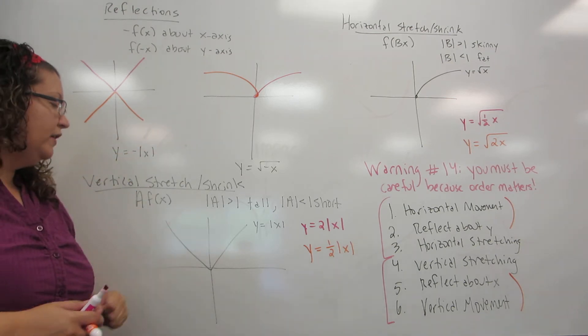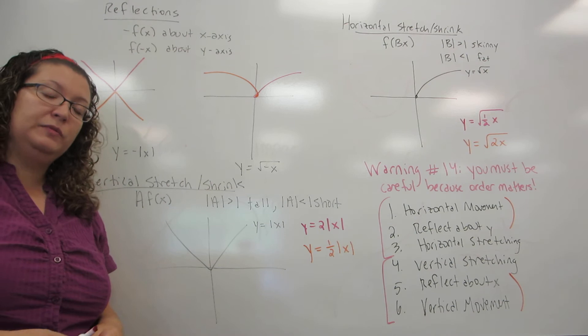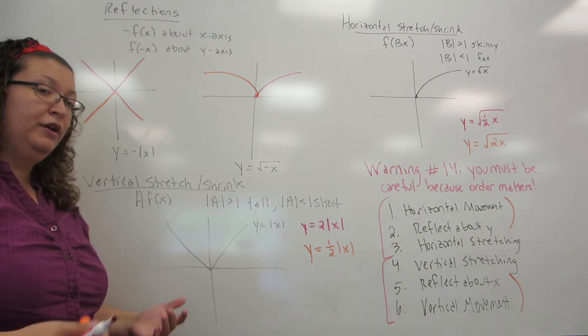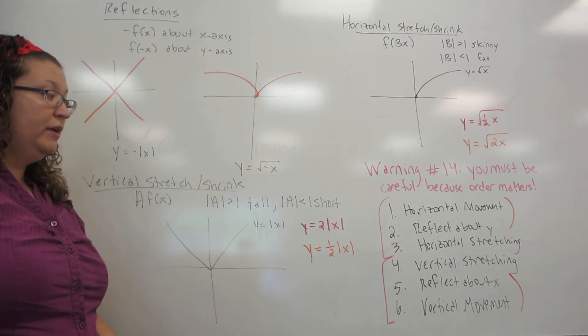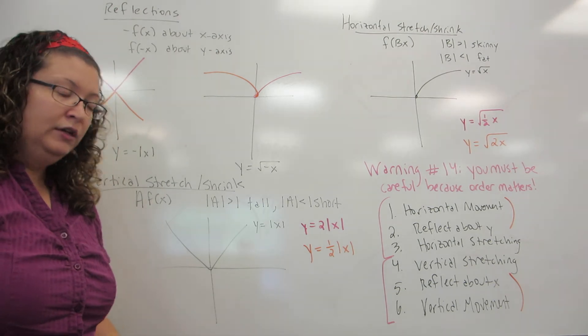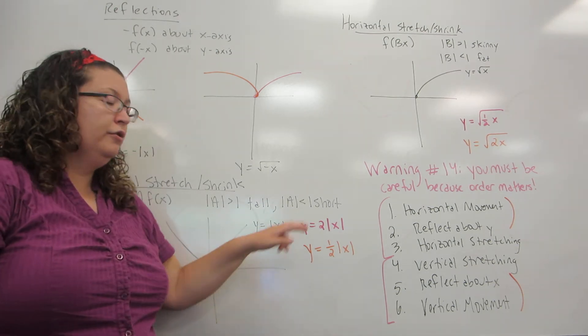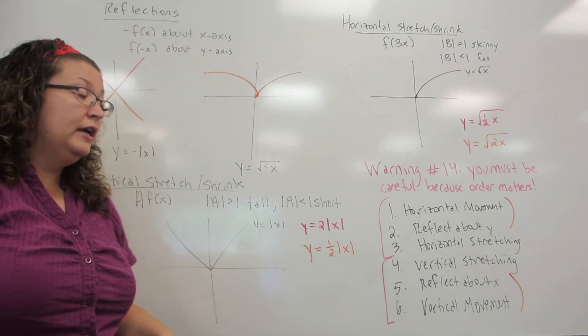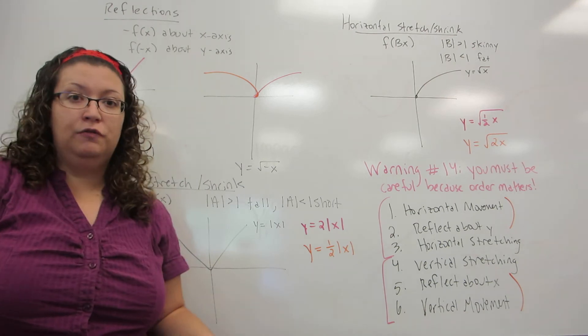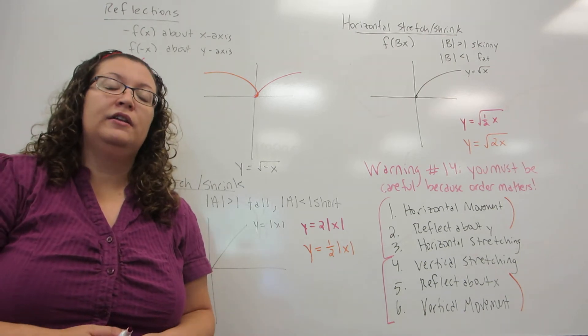So just looking at the absolute value of this number, as you might expect, if you're multiplying it by a number bigger than one, say seven, it'll make it taller by a factor of seven. If you're multiplying by a number smaller than one, say one half, it'll make it shorter by a factor of one half, or in essence, cut it in two.